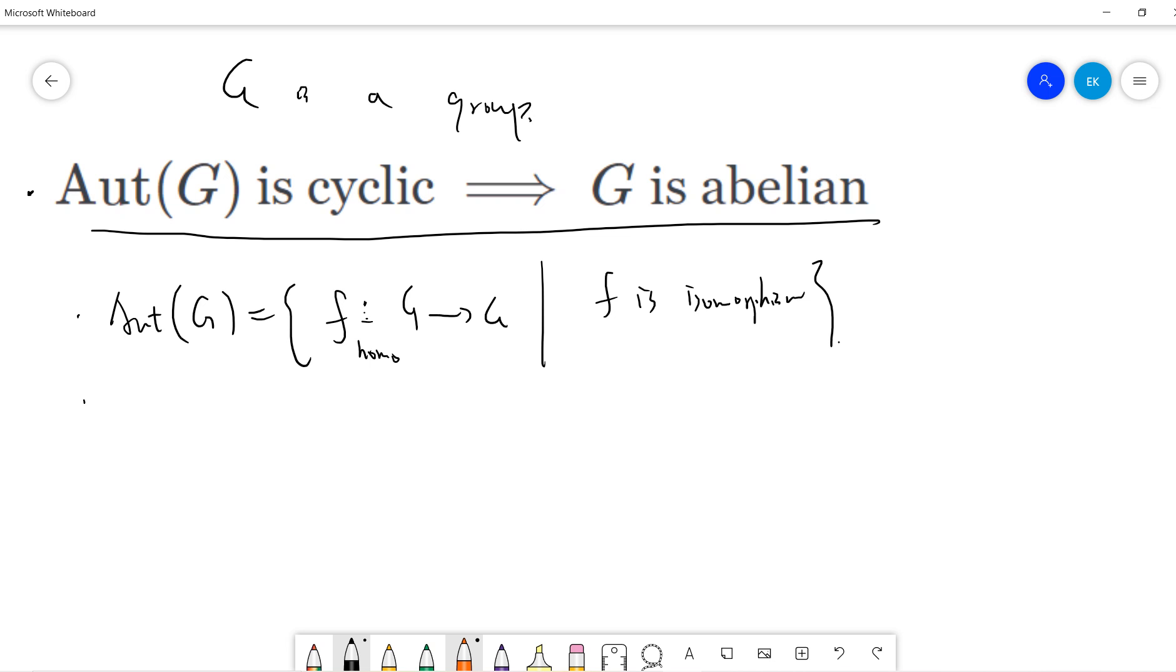The fact we will use is very easy, which I already proved in another video. If G quotient Z(G) is cyclic, then G is abelian.